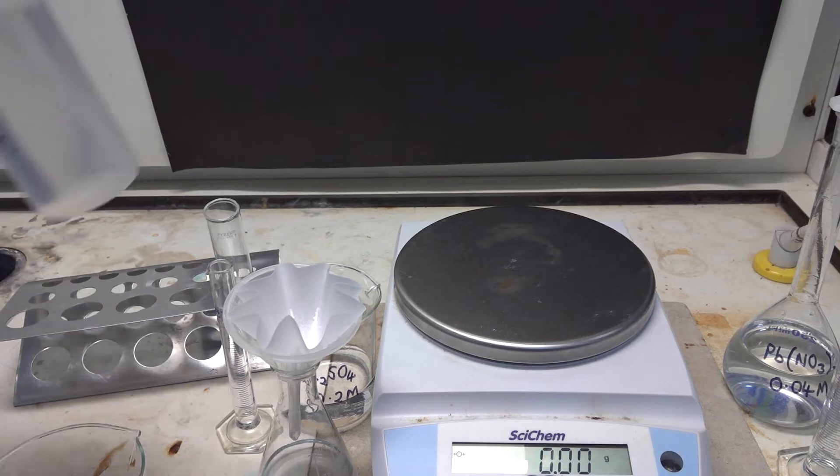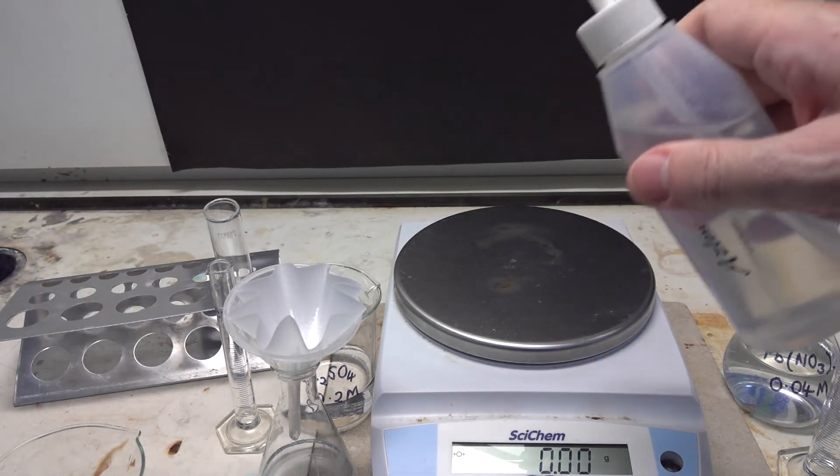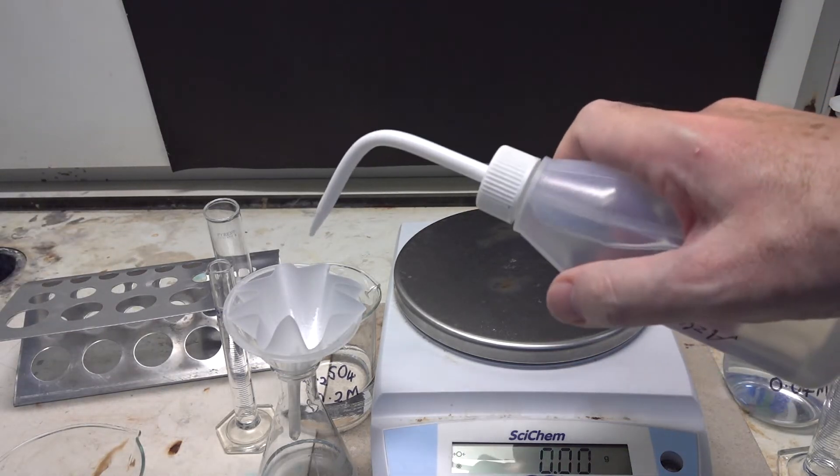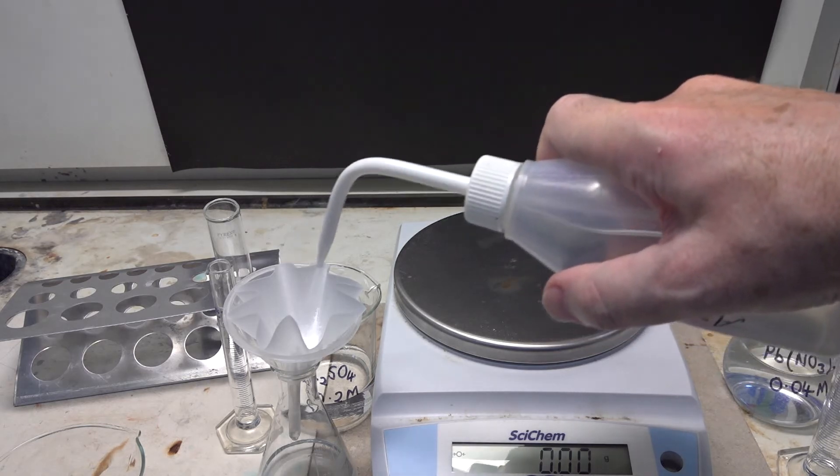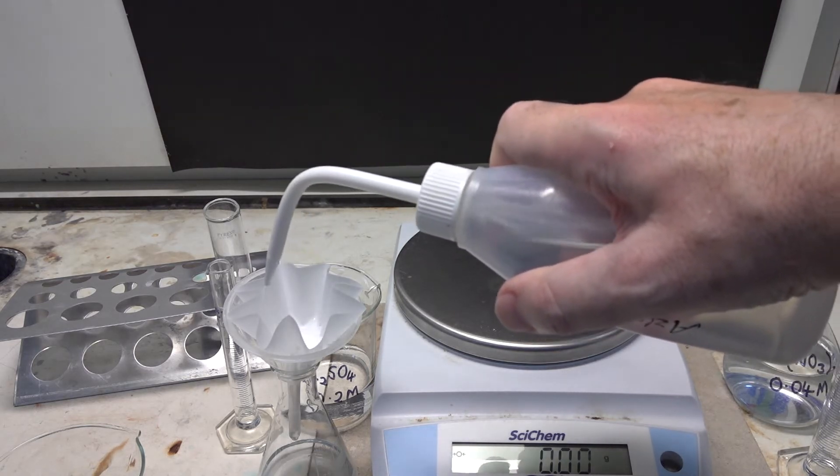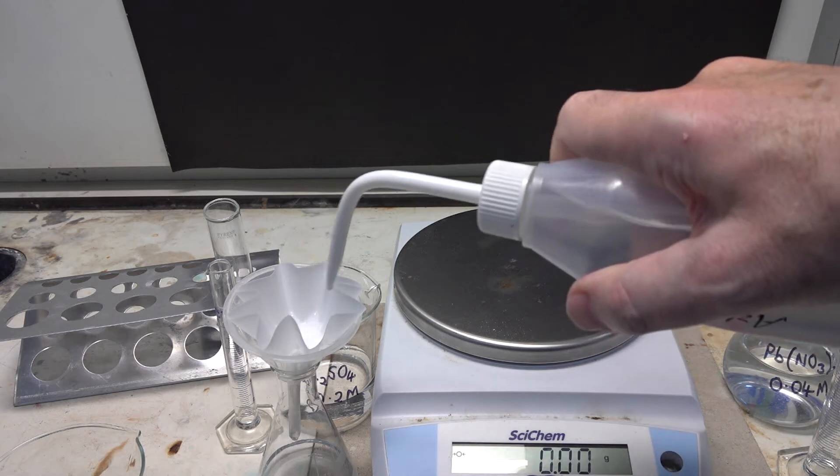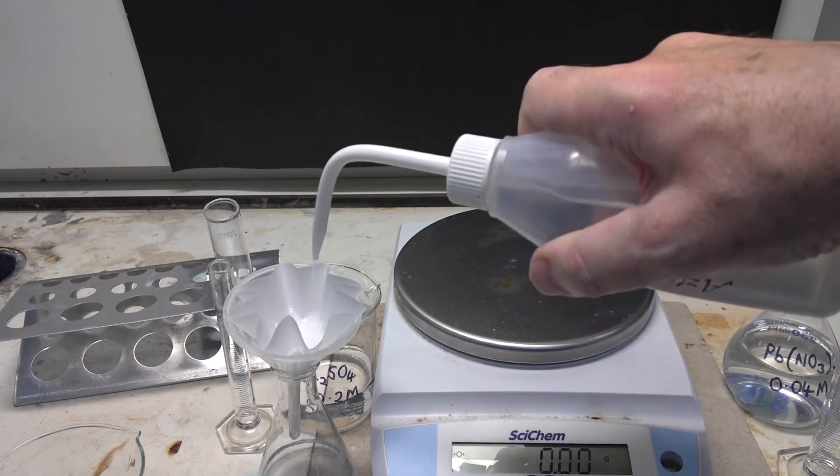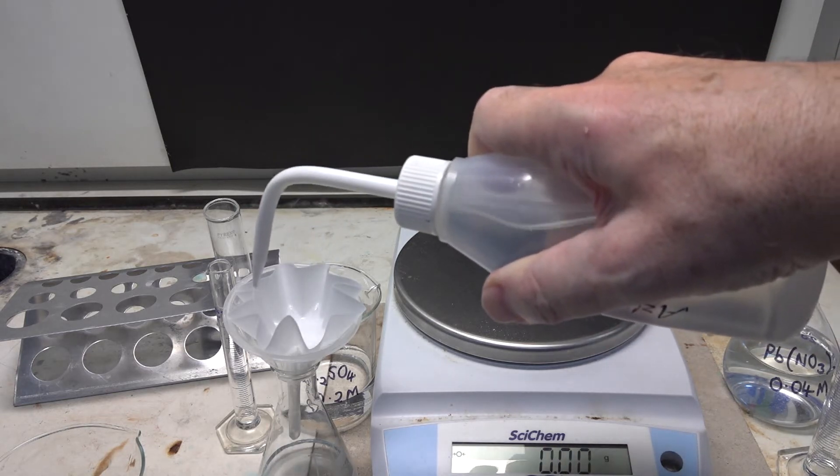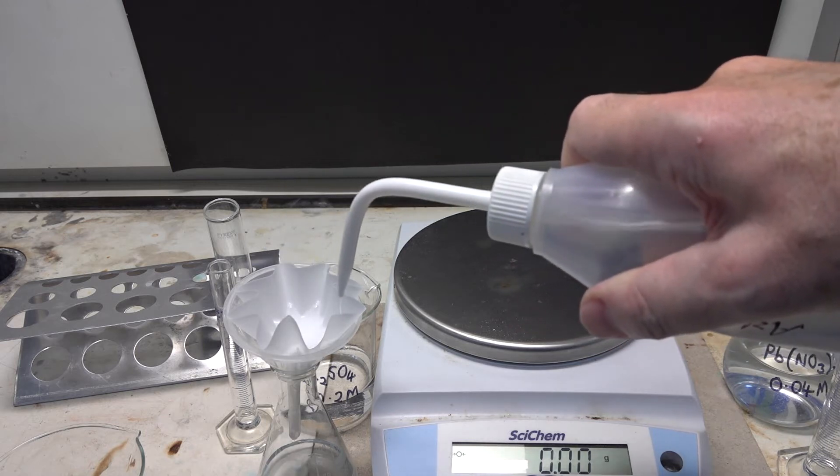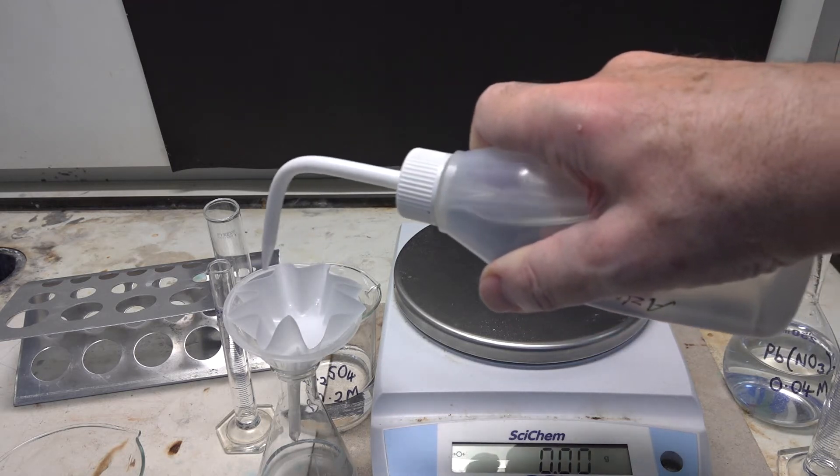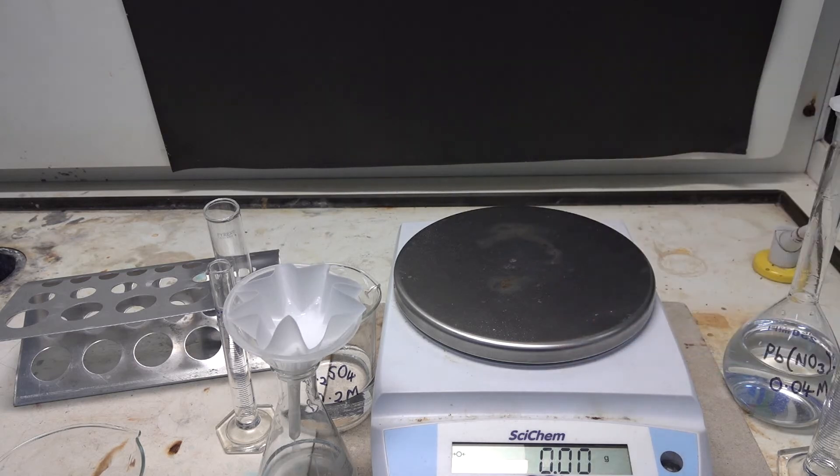Now that we've filtered the precipitate from the reaction mixture, the next stage is to wash the material to remove any impurities. So we do that carefully with the wash bottle, and the distilled water should wash away any insoluble impurities contaminating the product.